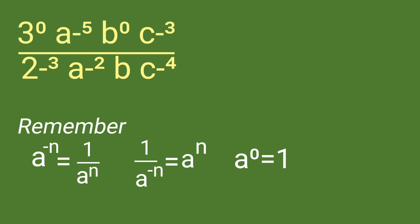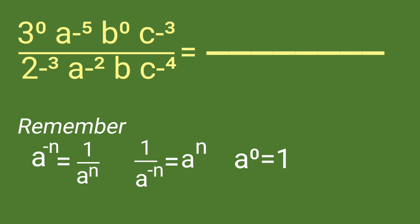Now going back to the expression, we can start rewriting. We begin with the numerical coefficients. 3 raised to 0 is 1, and 2 raised to negative 3 is placed in the numerator and becomes 2 raised to 3.